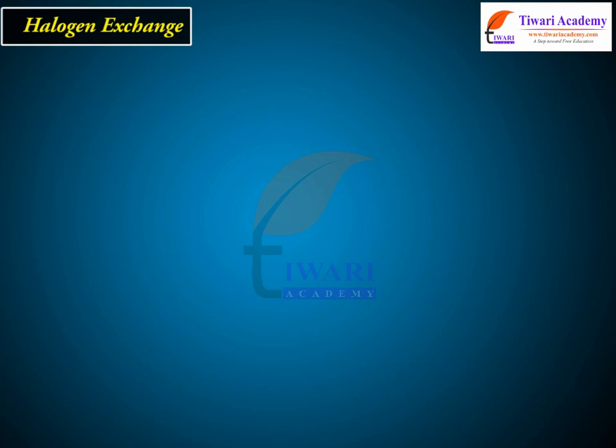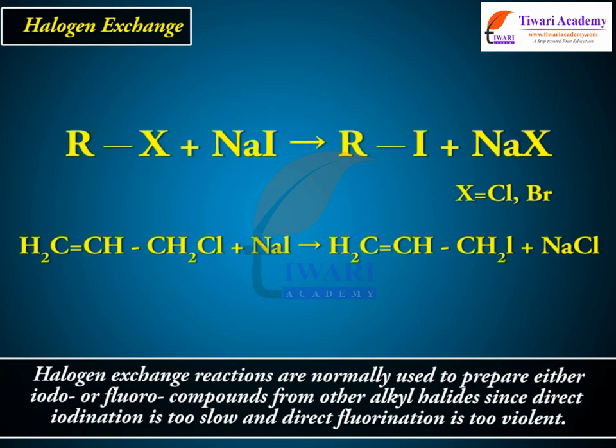Halogen exchange reactions are normally used to prepare either iodo or fluoro compounds from other alkyl halides, since direct iodination is too slow and direct fluorination is too violent.